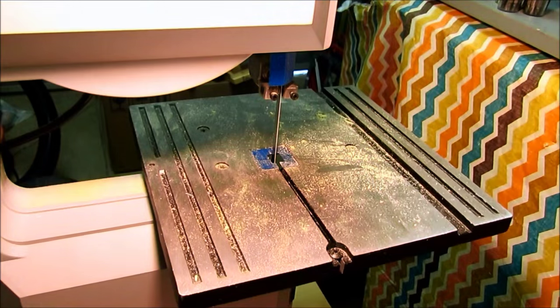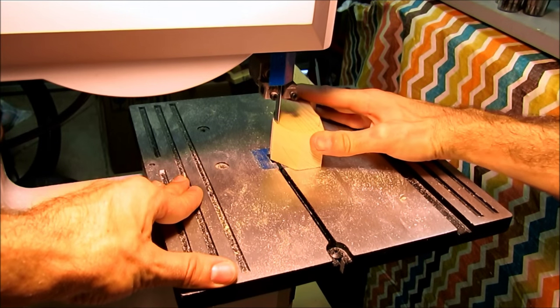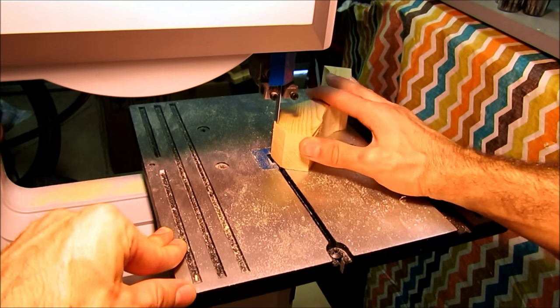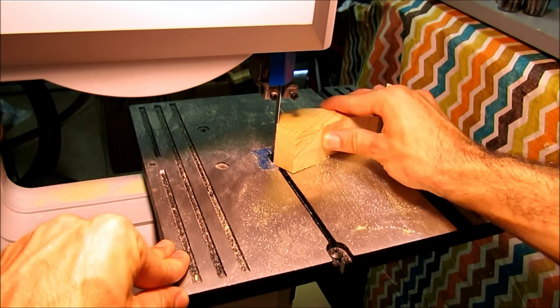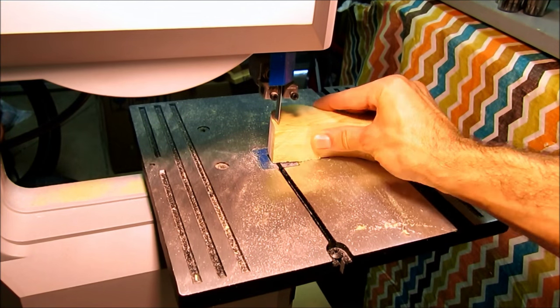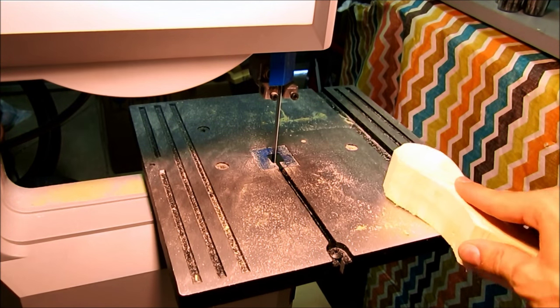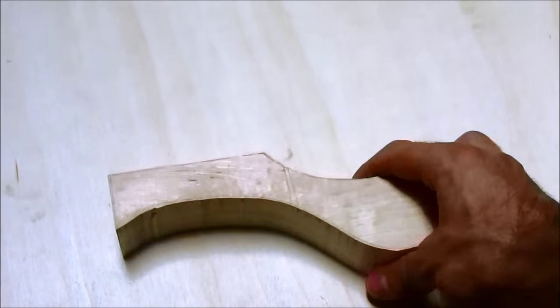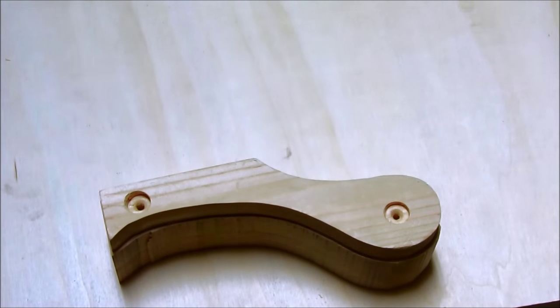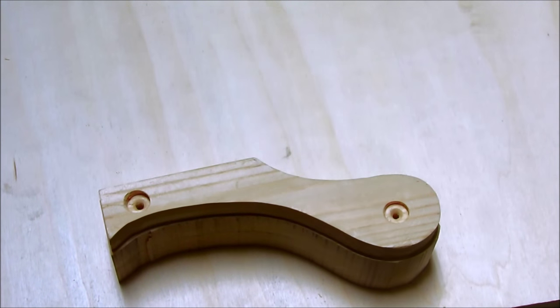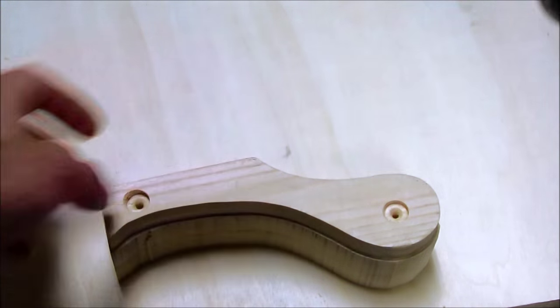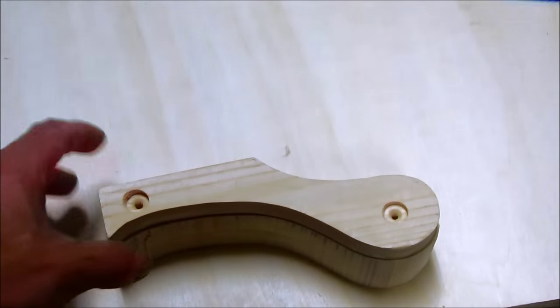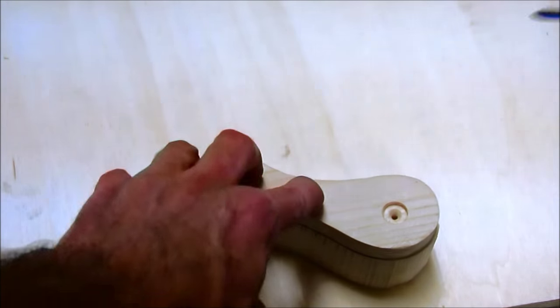You could probably use a 2x4, which is already one and a half inches wide, but they're never straight, so I think it's easier if you just glue two boards together. I decided to use the template that I built with my router with a flush trim router bit.